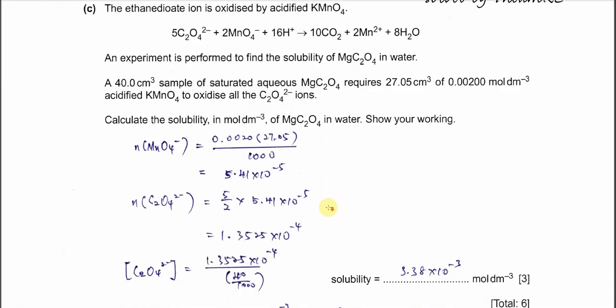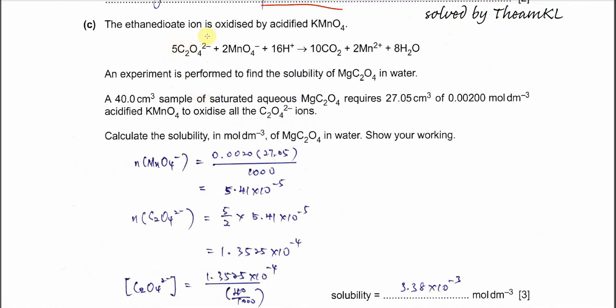For part C, the ethanedioate ion is oxidized by acidified KMnO₄. The equation is given. The mole ratio between the ethanedioate to the permanganate ion is 5 to 2. Now an experiment is performed to find the solubility of magnesium ethanedioate in water. A 40 cm³ sample of the solution required 27.05 cm³ of 0.002 mol/dm³ acidified KMnO₄ to oxidize all the ethanedioate ion.